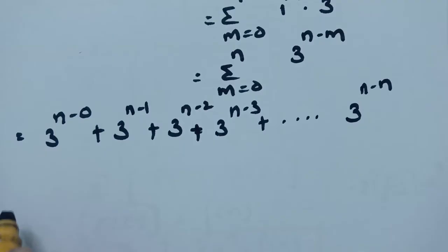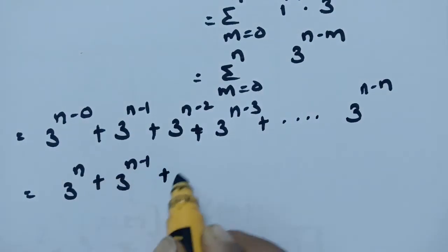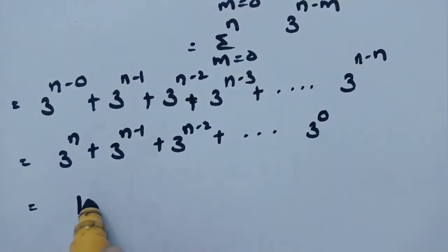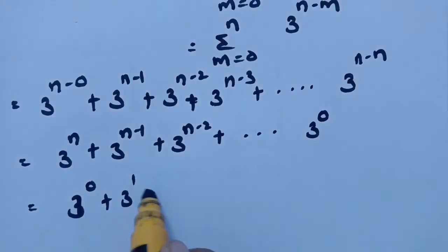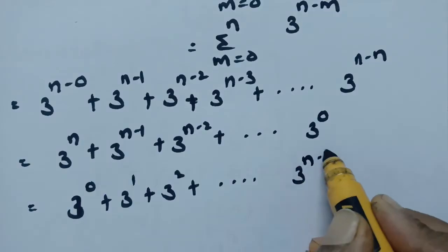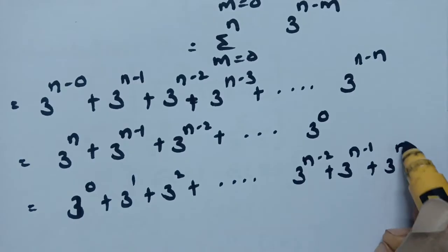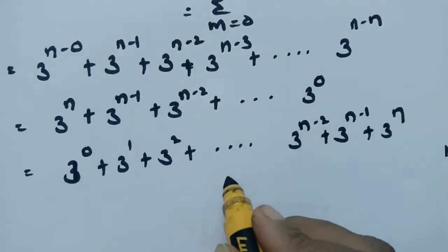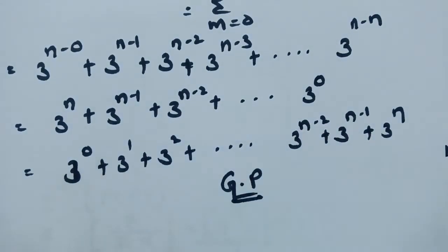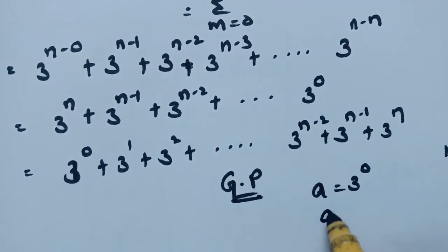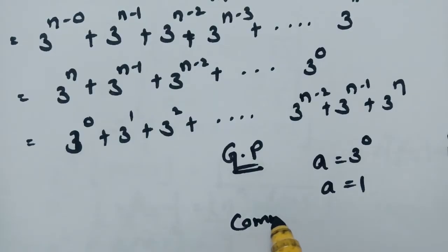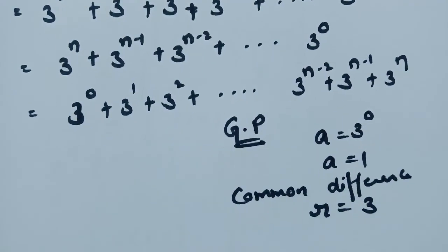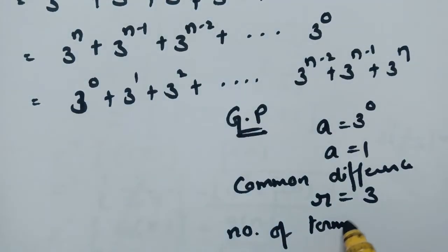So the series is 3⁰ + 3¹ + 3² + ... + 3ⁿ, which is a geometric progression. Here a = 3⁰ = 1, common ratio r = 3, and the number of terms is n+1.